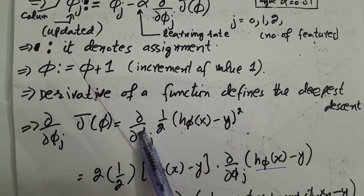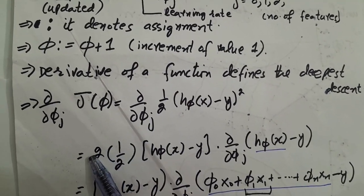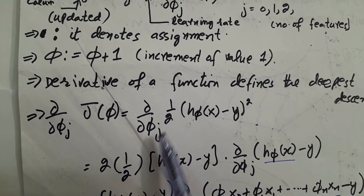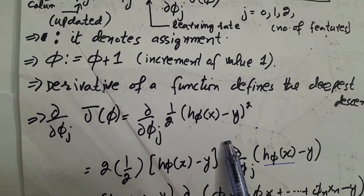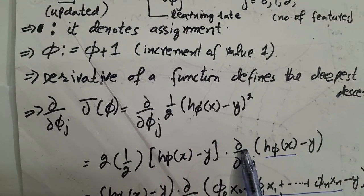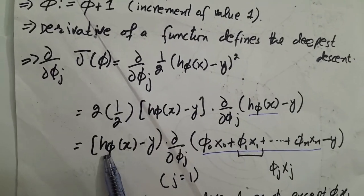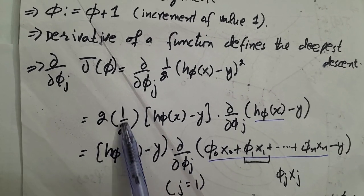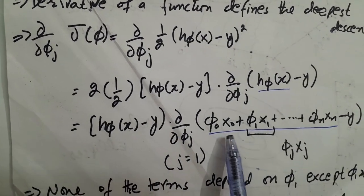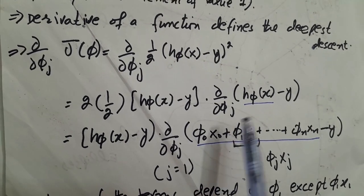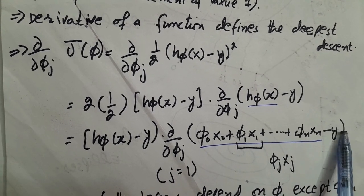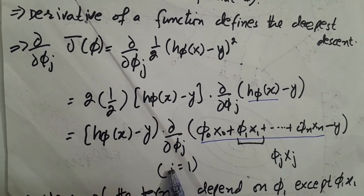Now we are going to take the derivative. The power 2 is coming down. The central function is as it is, taking 1 minus. Now its power is 1. Now taking the partial function of the internal function, here it becomes this. The 2 cancels by this, and now it comes here. Taking the partial function of this, if we are going to open this function as it was previously explained, it is phi naught x naught plus phi 1 x1 and so on, where if j is equal to 1.